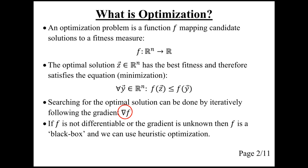The traditional way of finding the optimal solution is to follow the gradient of the function f. But if we don't know the gradient, then we may consider f to be a black box function, and we can use heuristic optimization.